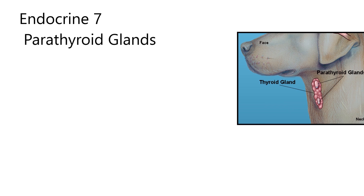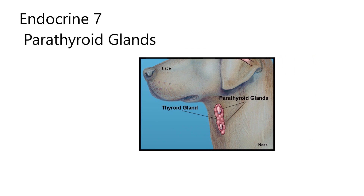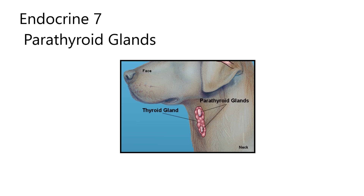I've got a diagram here that some artists made. We may have seen this before in a previous lesson. This is a dog - the muzzle, the ear, the neck region. What we're highlighting here is the thyroid gland and the parathyroid glands.